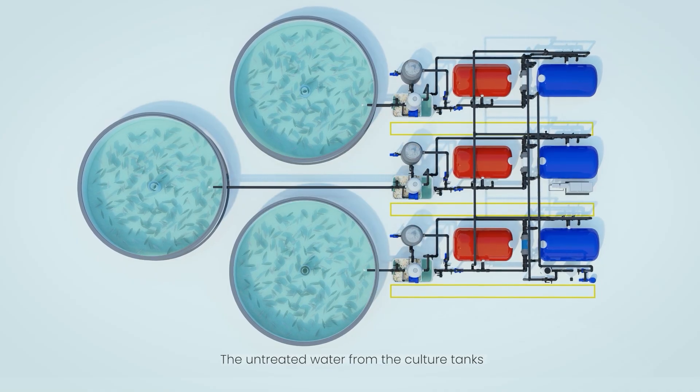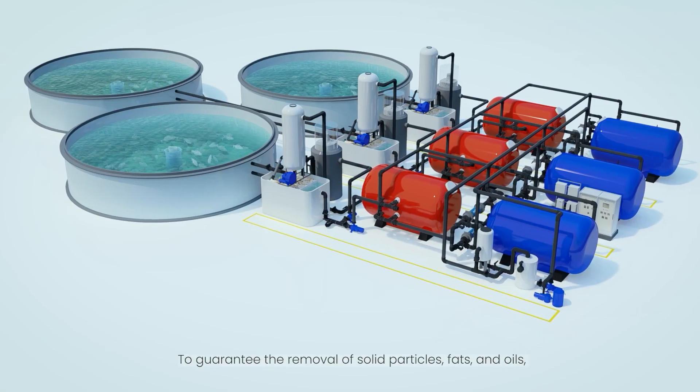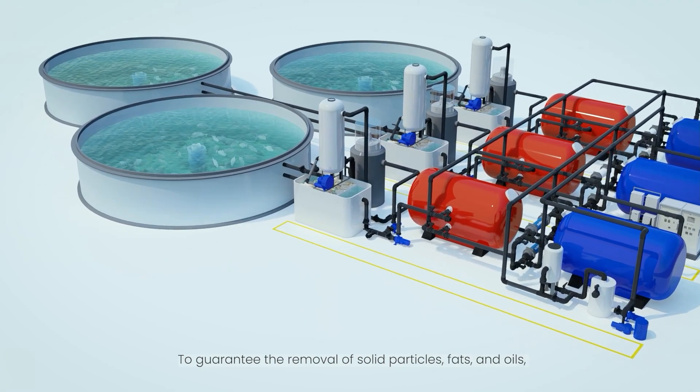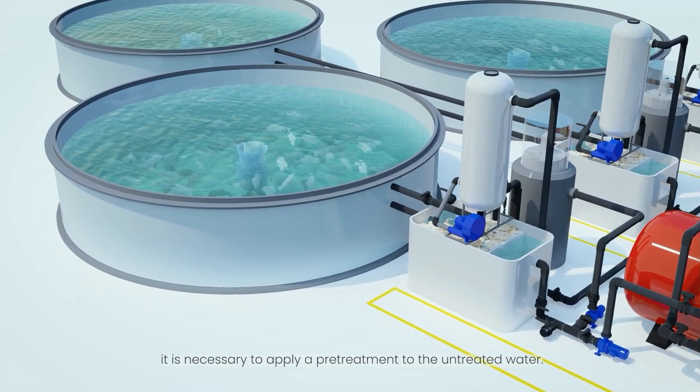The untreated water from the culture tanks flows by gravity to ELOXIRAS treatment. To guarantee the removal of solid particles, fats and oils, it is necessary to apply a pretreatment to the untreated water.